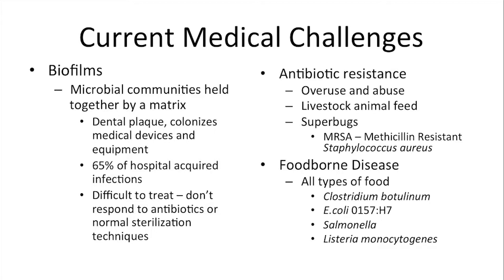Salmonella is another foodborne pathogen. Recently, foods found to be contaminated with Salmonella included peanut butter, alfalfa sprouts, and even eggs. And for those of us in Texas, we remember the Blue Bell issues, where Blue Bell was shut down because of listeriosis and had to go through extensive sterilization techniques before they could get back up and running.